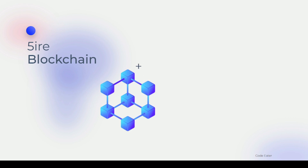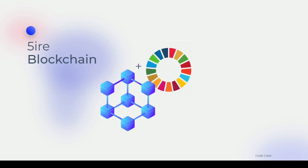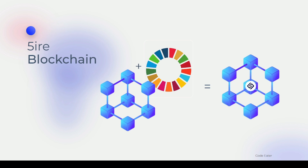What Fire Technology is actually doing is integrating blockchain with the United Nations' 17 SDGs. When you integrate a blockchain with these 17 SDGs, what you get is a new kind of blockchain — and that blockchain is Fire Blockchain.